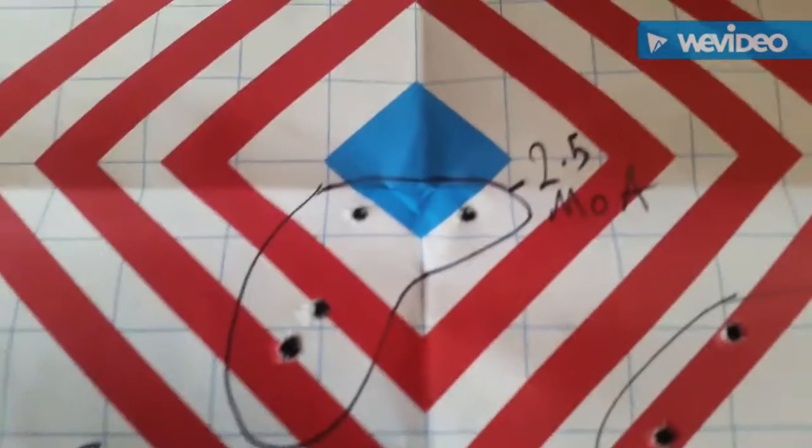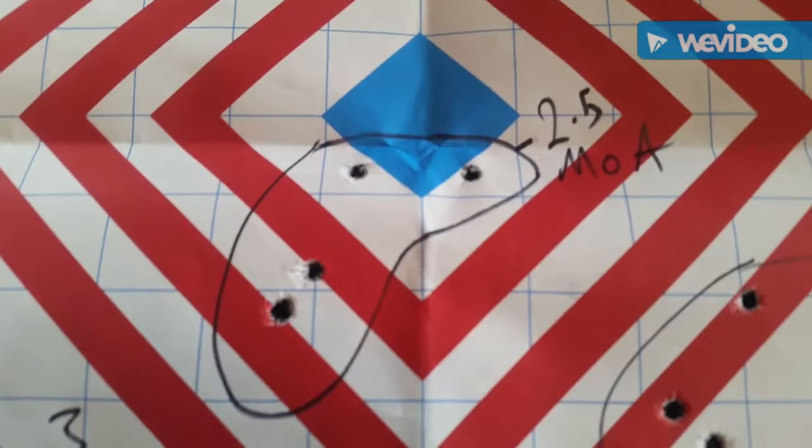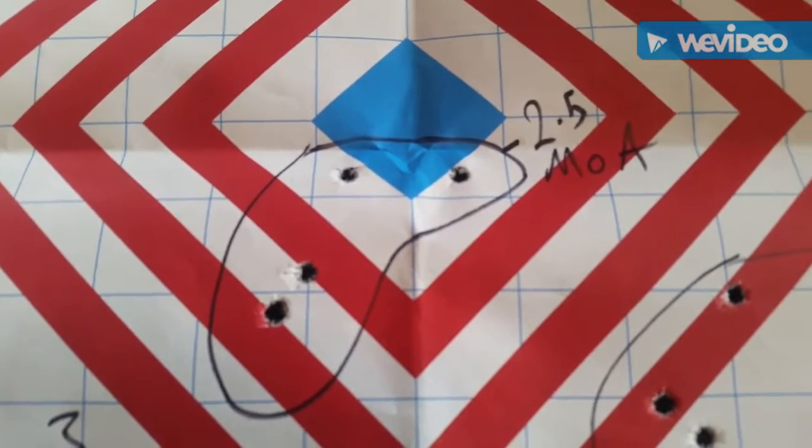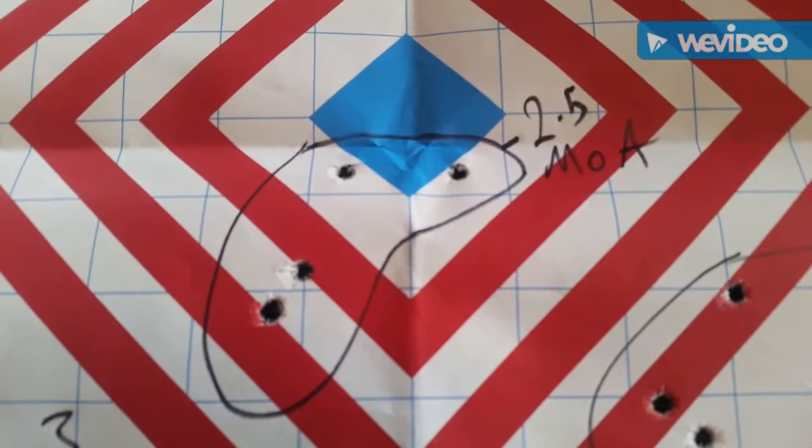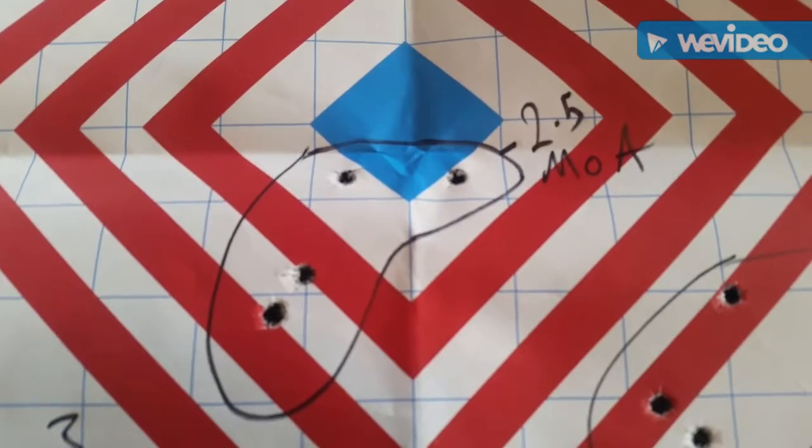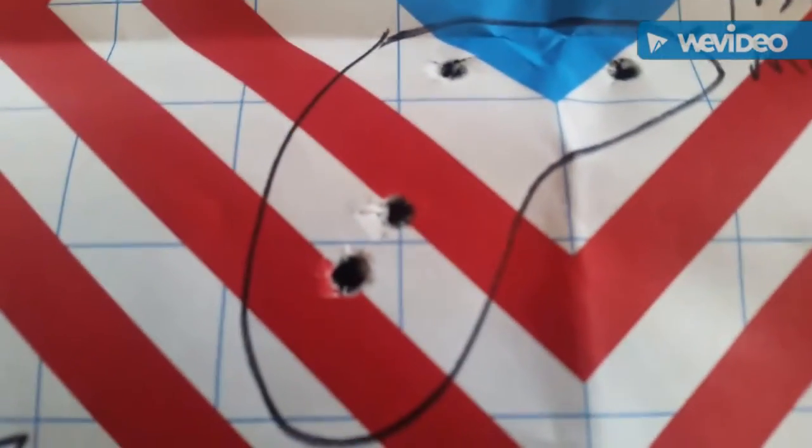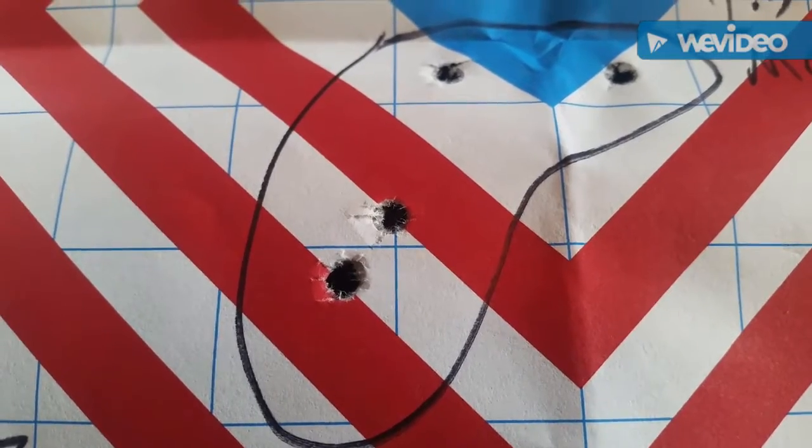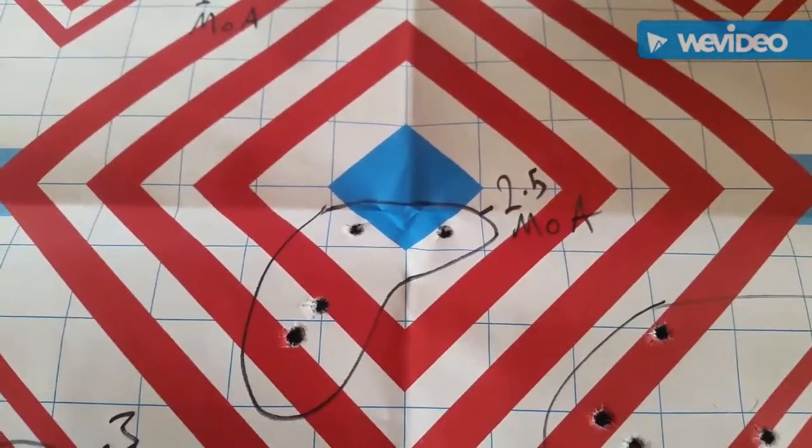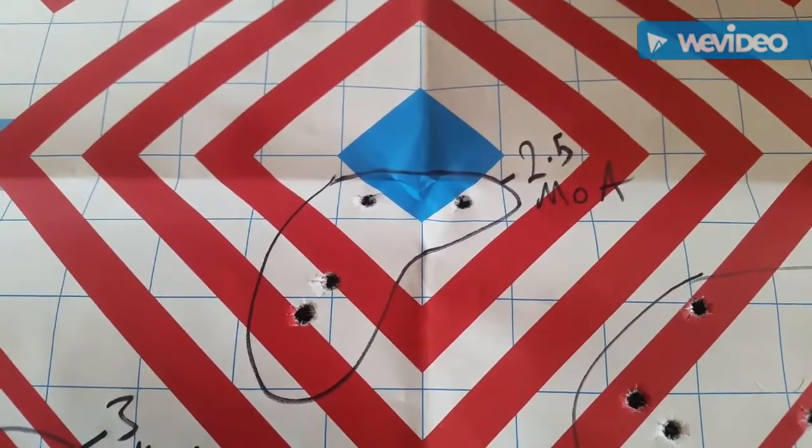This one's getting a little better: two and a half MOA. As you can see there's four holes here instead of five. I have no idea where the fifth bullet went. Maybe one of these is actually a double. I don't know, but two and a half MOA on a four shot group.